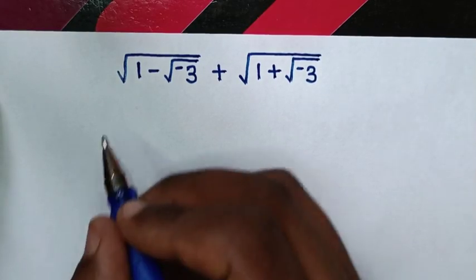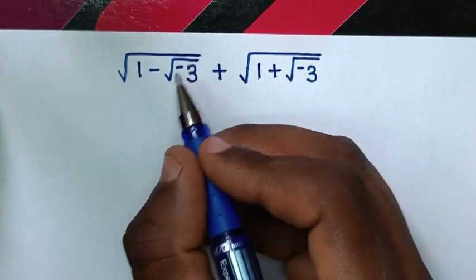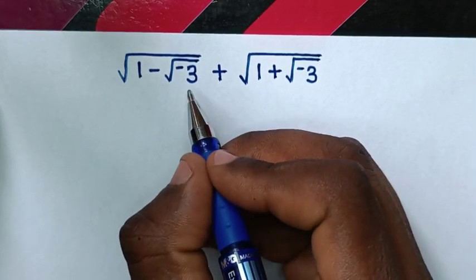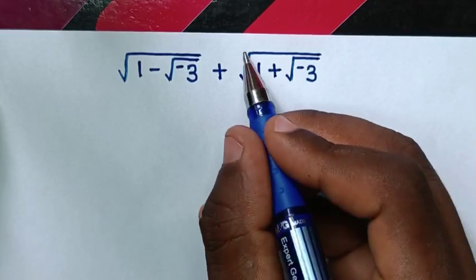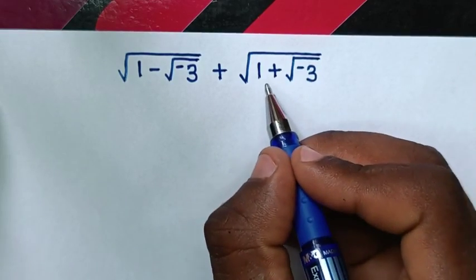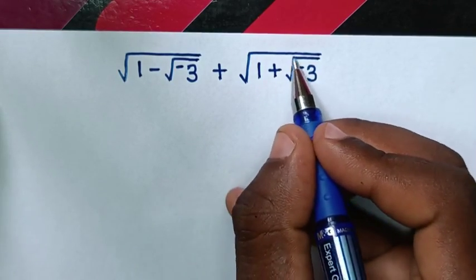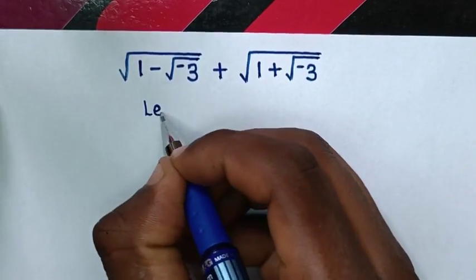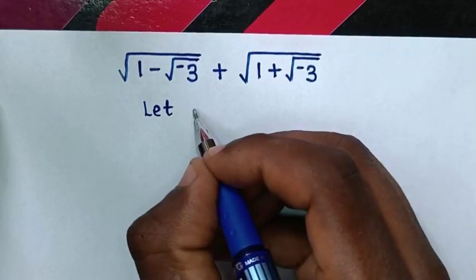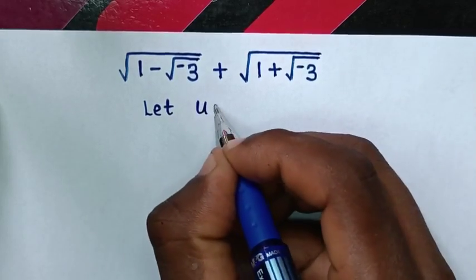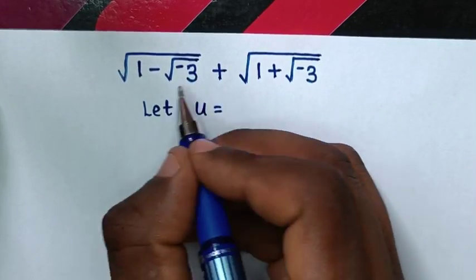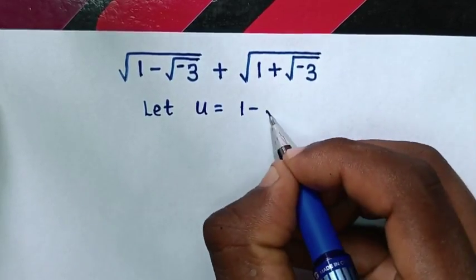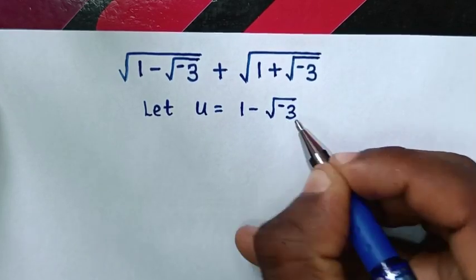Hello. How to solve square root of (1 minus square root of negative 3) plus square root of (1 plus square root of negative 3). So first we let u be equal to the expression under the first square root, which is 1 minus square root of negative 3.